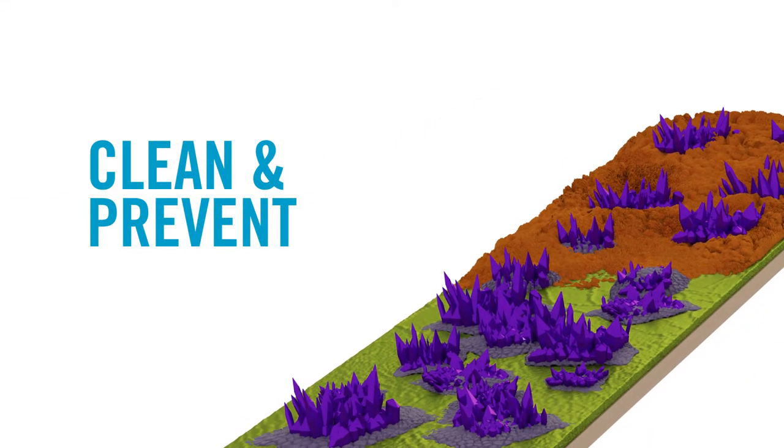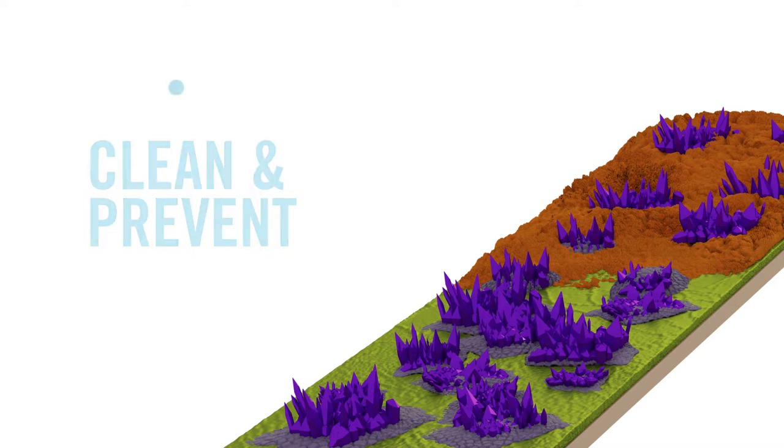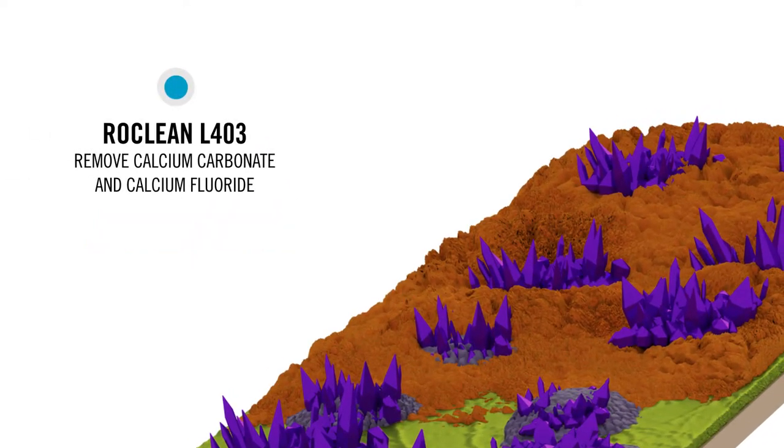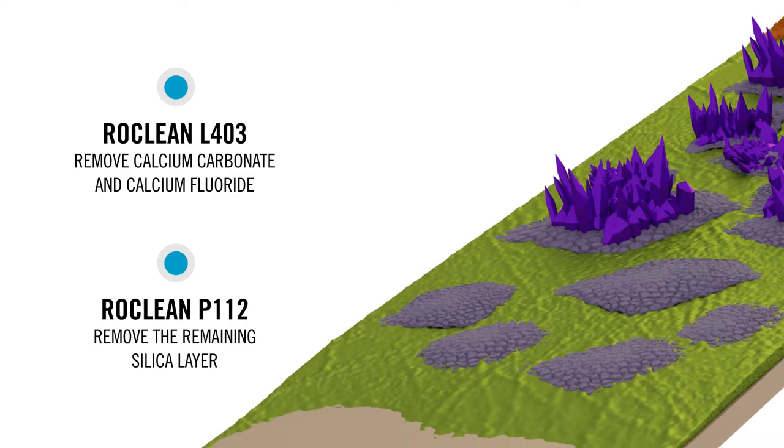Knowing this information, we were able to make recommendations to clean and prevent the foulant. RoeClean L403, a buffered low pH cleaner, was chosen to remove both the calcium fluoride and calcium carbonate layers. RoeClean P112, a high pH targeted silica cleaner which does not carry the hazards associated with ammonium bifluoride, was used to remove the silica layer.